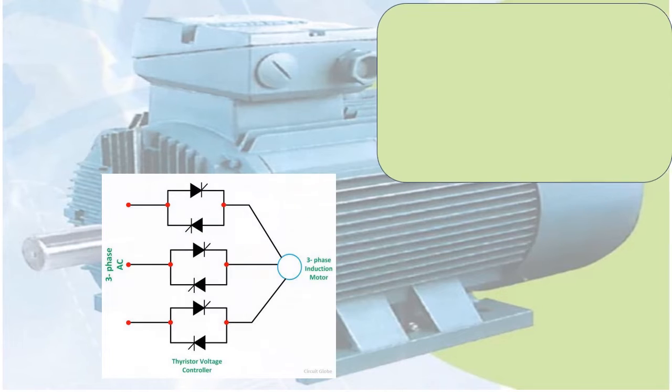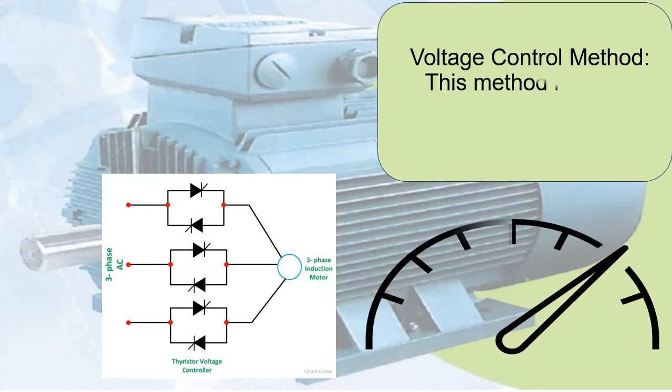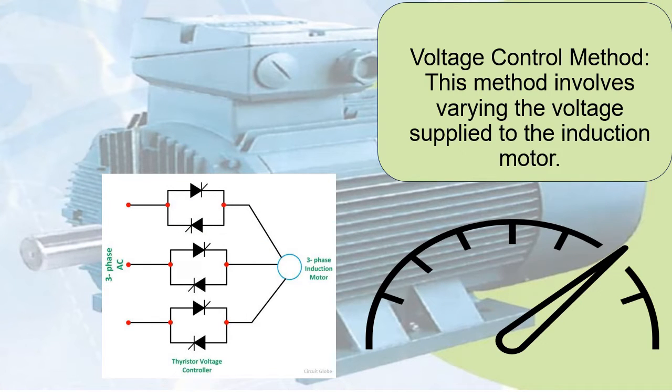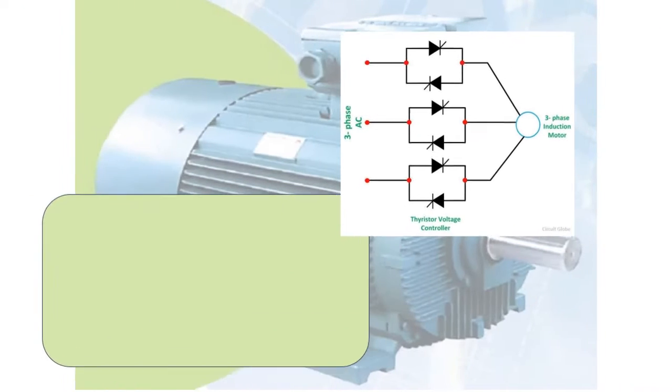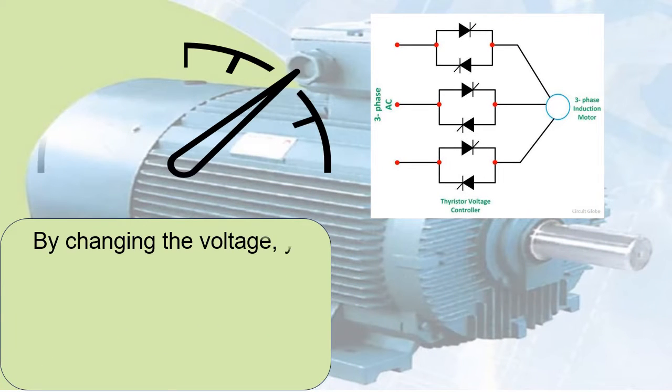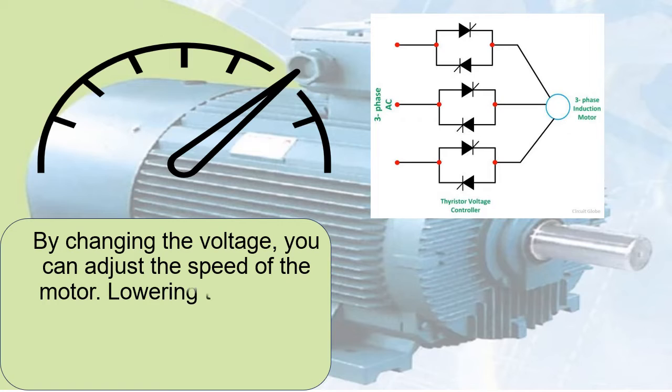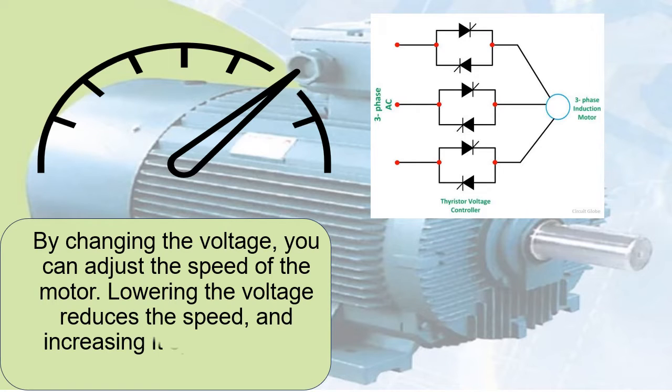Voltage Control Method: This method involves varying the voltage supplied to the induction motor. By changing the voltage, you can adjust the speed of the motor. Lowering the voltage reduces the speed, and increasing it speeds up the motor.